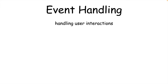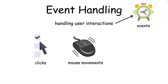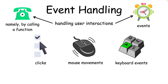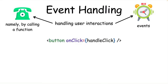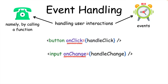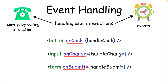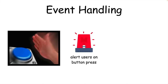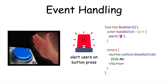Whenever someone uses our app, tons of events take place like clicks, mouse movements, and key presses, many of which we need to detect. Event handling is how we take those user events and do something with them. React has a lot of built-in events such as onClick, onChange, and onSubmit. If we want to alert users when a button is clicked, we would add the onClick prop to the button and connect it to a function that would show that alert.